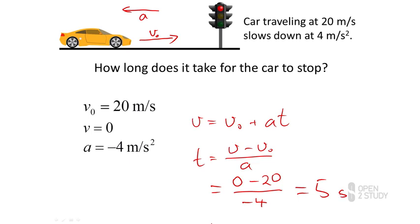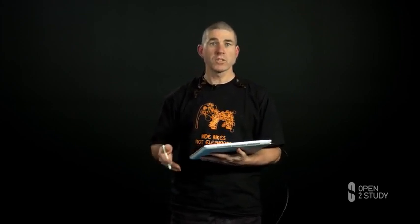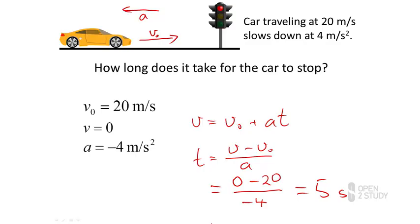Which gives us 5 seconds — it took 5 seconds to slow down. Importantly, if we'd had the acceleration as positive, we would have got a negative time, which would have made no sense at all. It's also worth checking: 5 seconds sounds about the right time to slow down for a traffic light — not 5 hours or 5 milliseconds. It kind of makes sense.